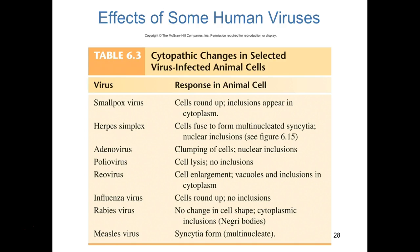Scientists studying viruses observe specific cytopathic changes. Herpes simplex virus causes cells to form syncytia in culture. Poliovirus explodes the cell — cells inoculated on Monday would be floating dead in culture by Tuesday due to rapid viral takeover and lysis. Rabies virus doesn't change cell shape but causes inclusion bodies called Negri bodies in the cytoplasm of neurological cells. Measles virus also causes syncytia.